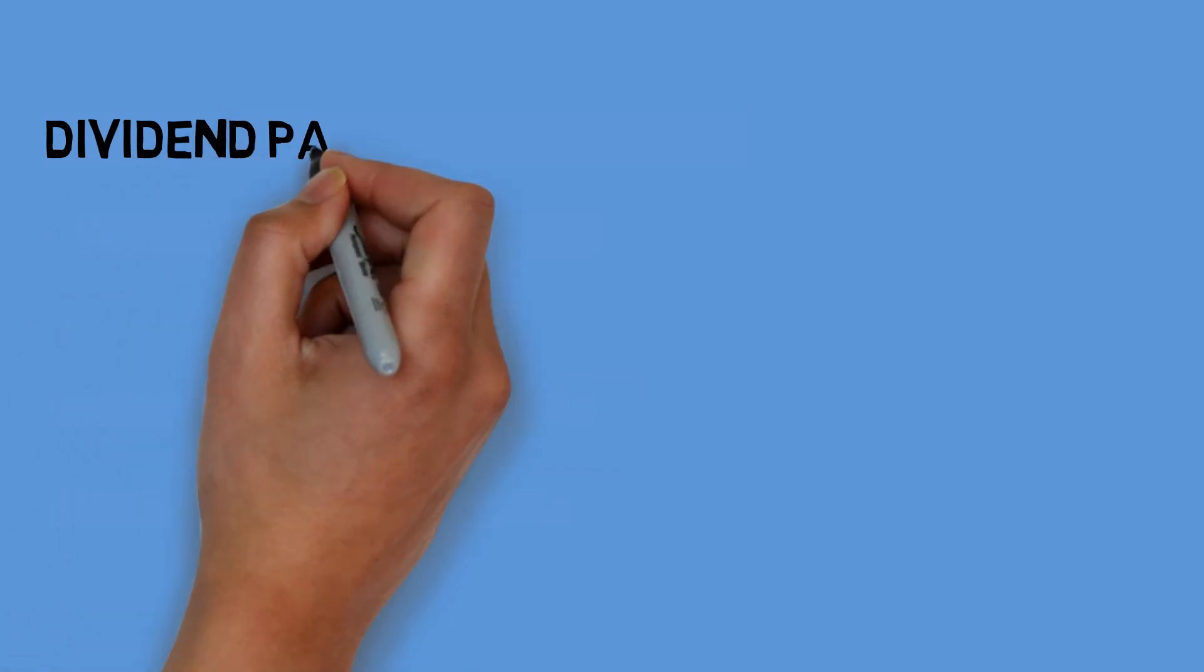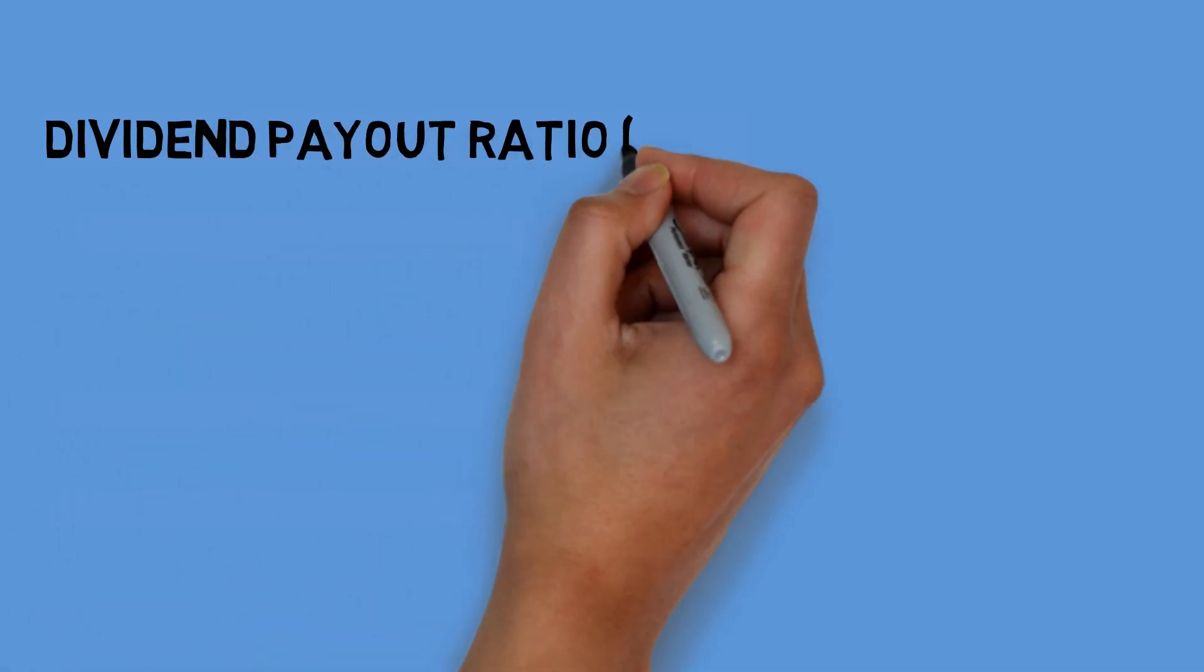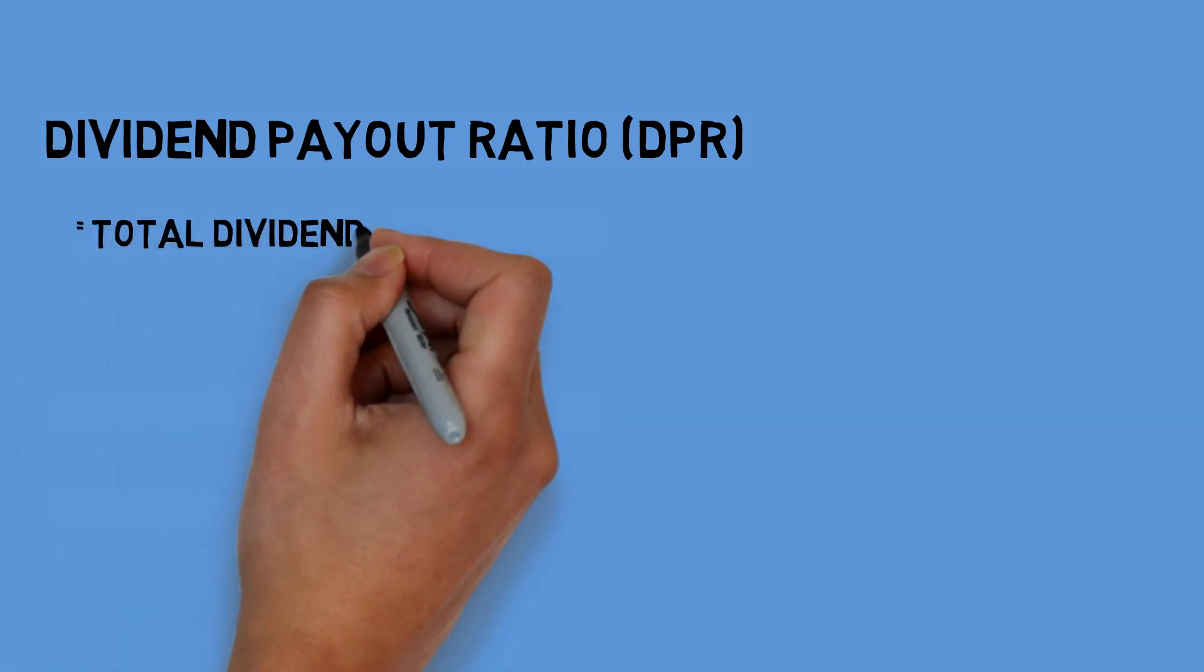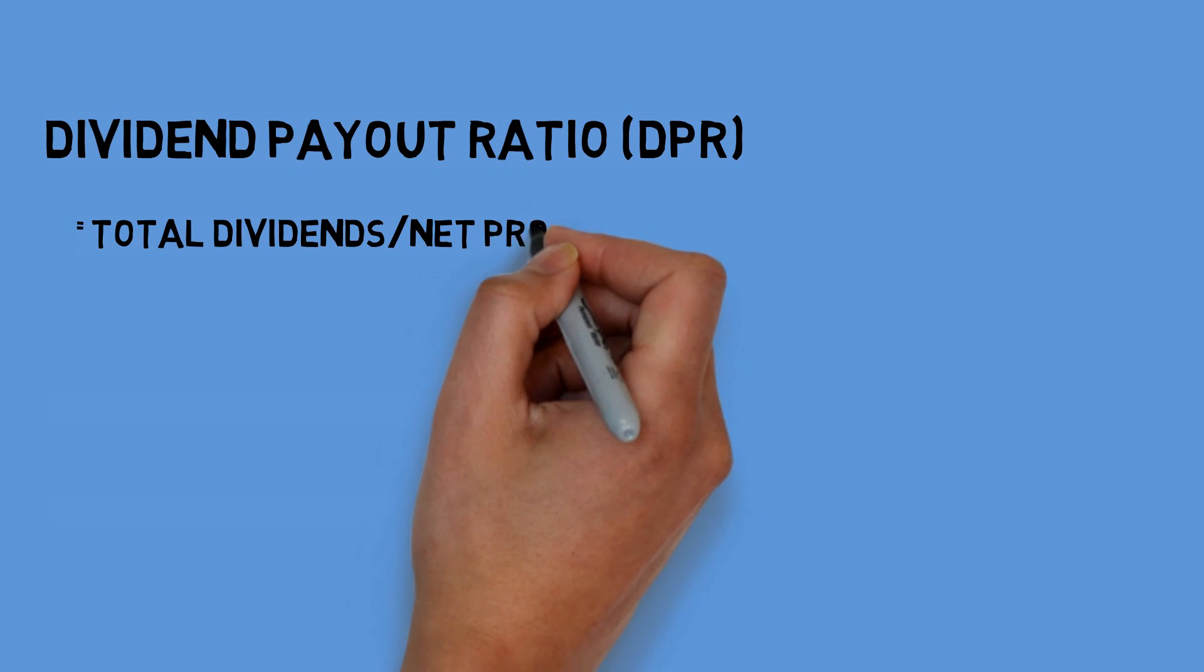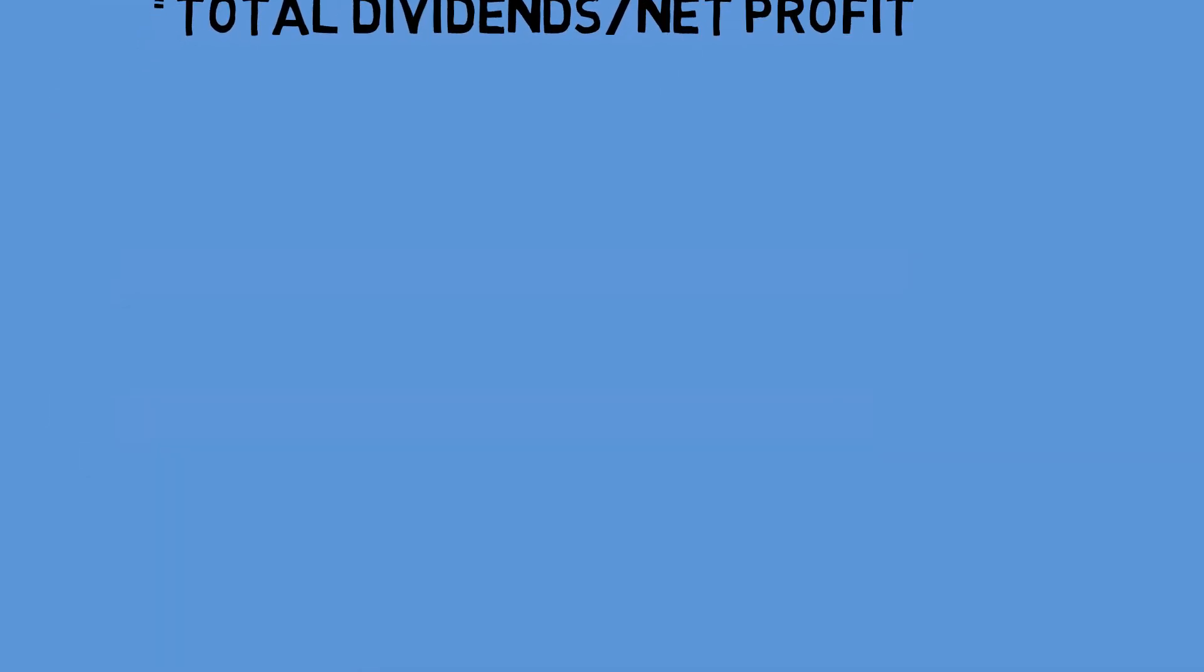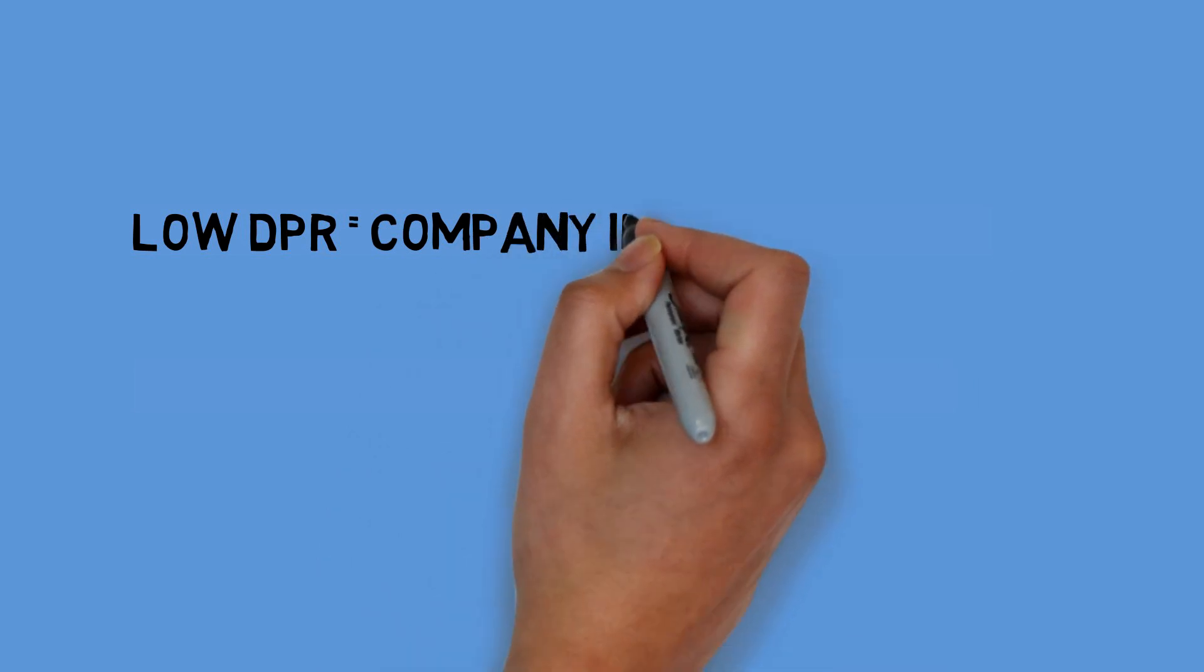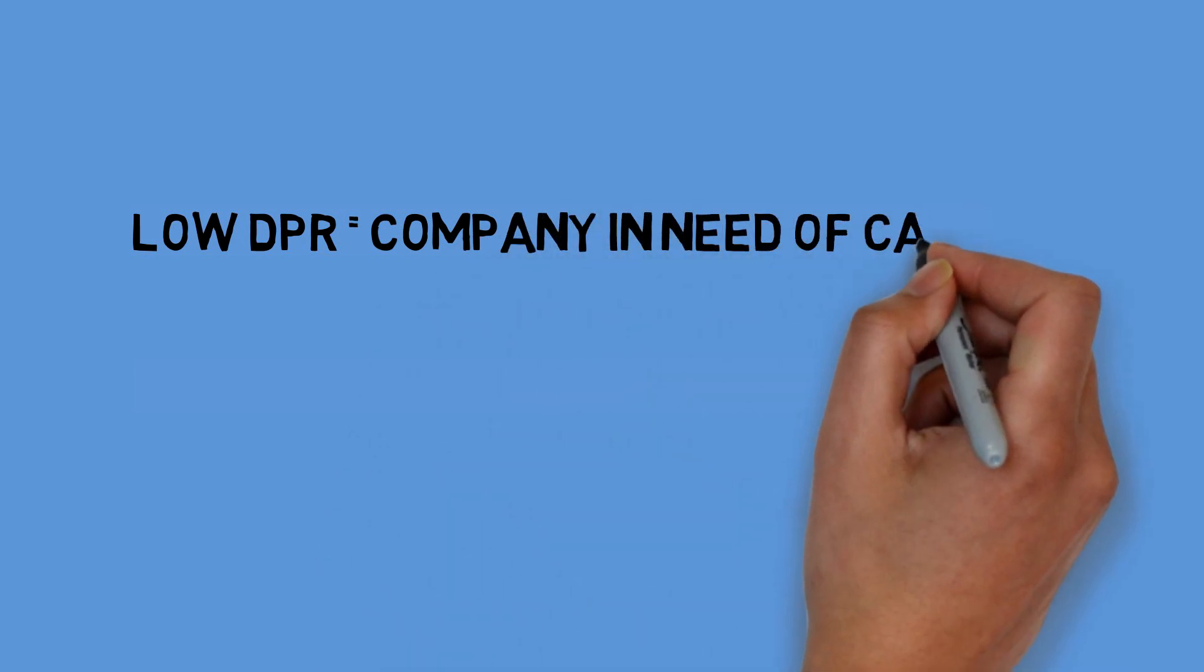Another ratio to look at is the dividend payout ratio. Dividend payout ratio is basically the total amount of dividends paid by the company compared to the net profit. A low dividend payout ratio can signal that the company is still in need of cash to grow its business.